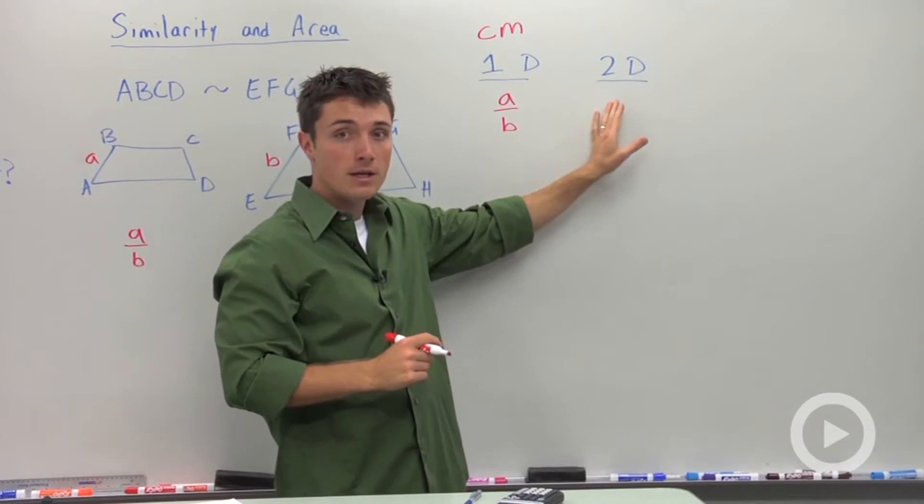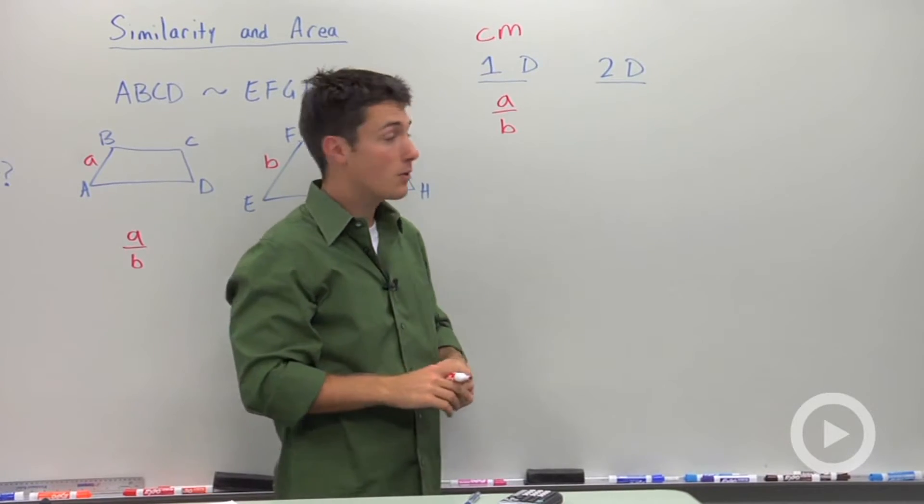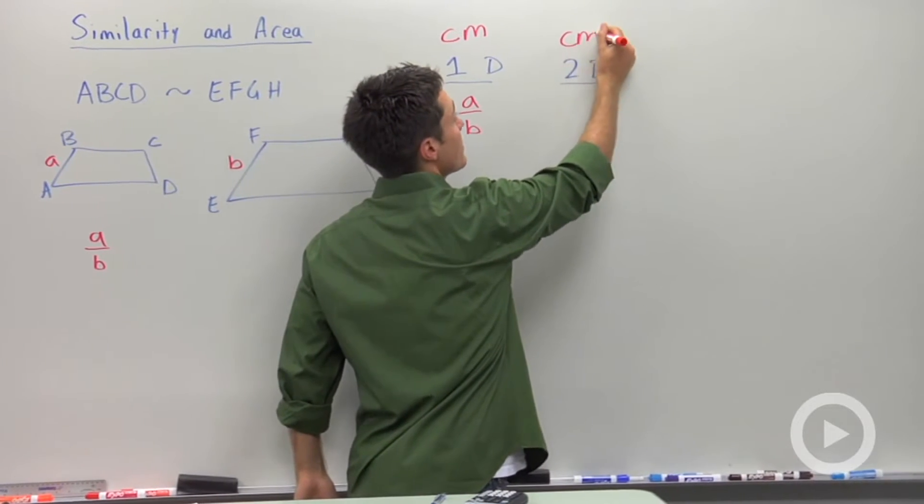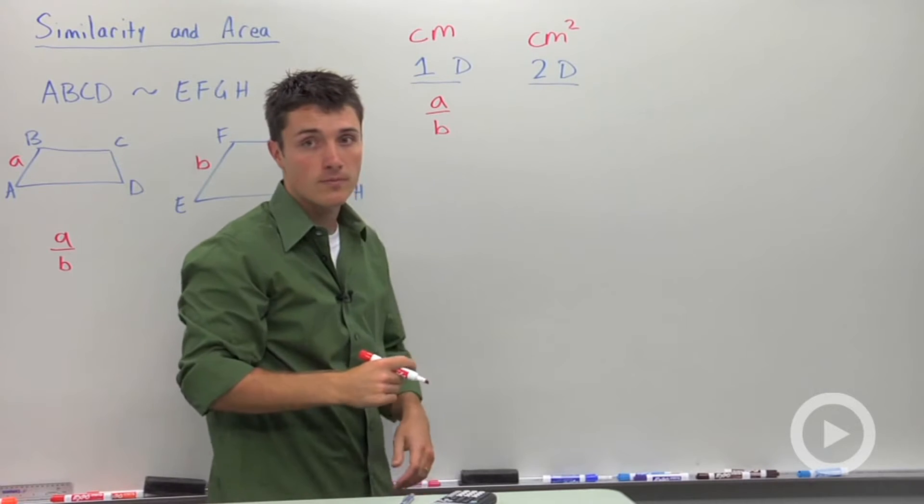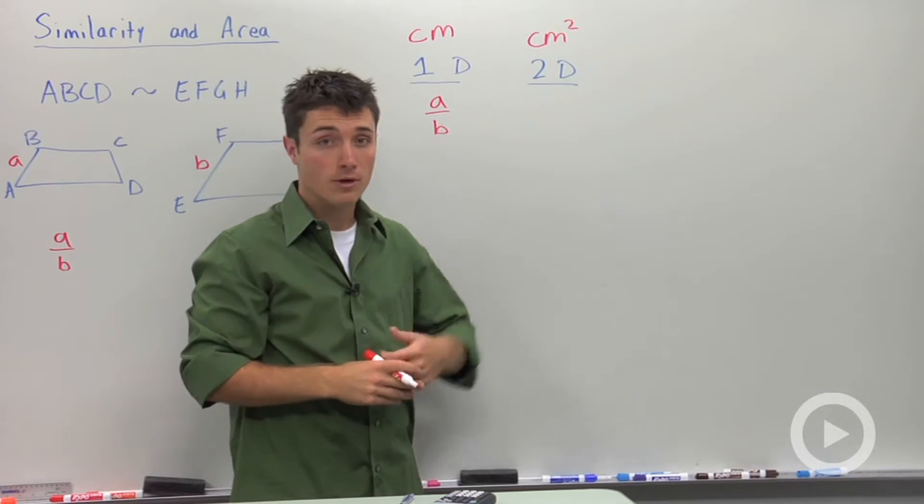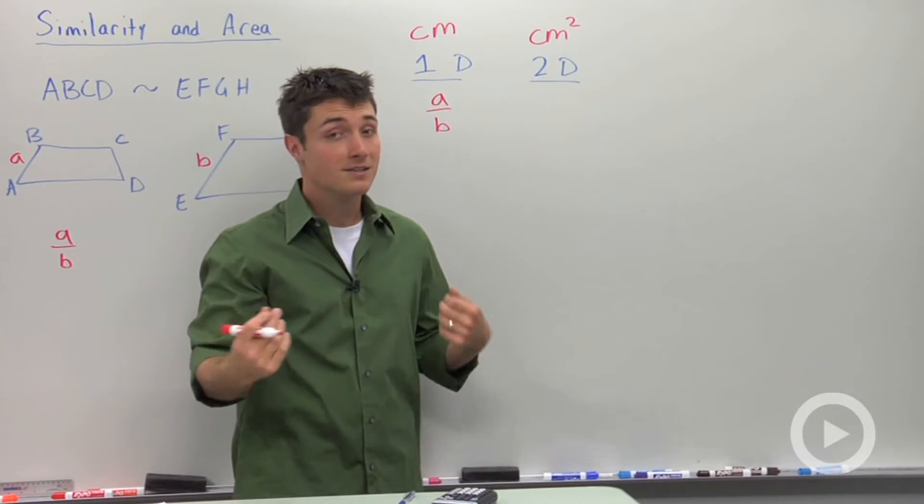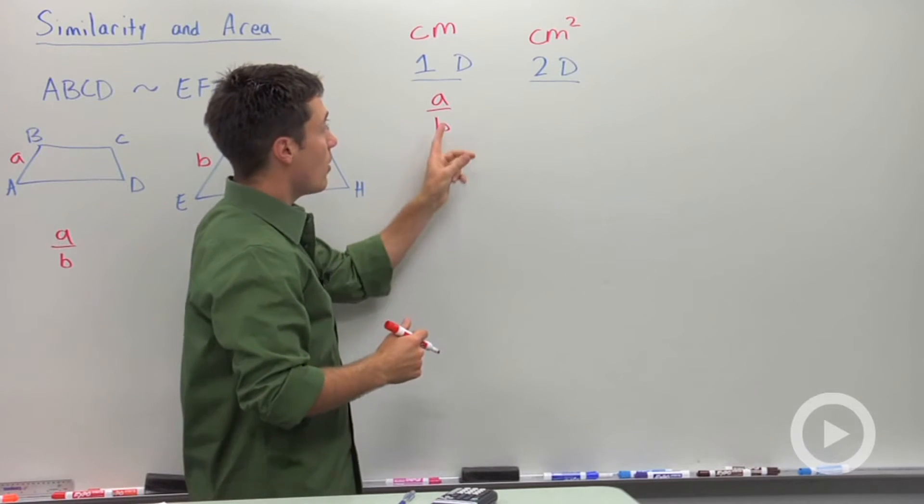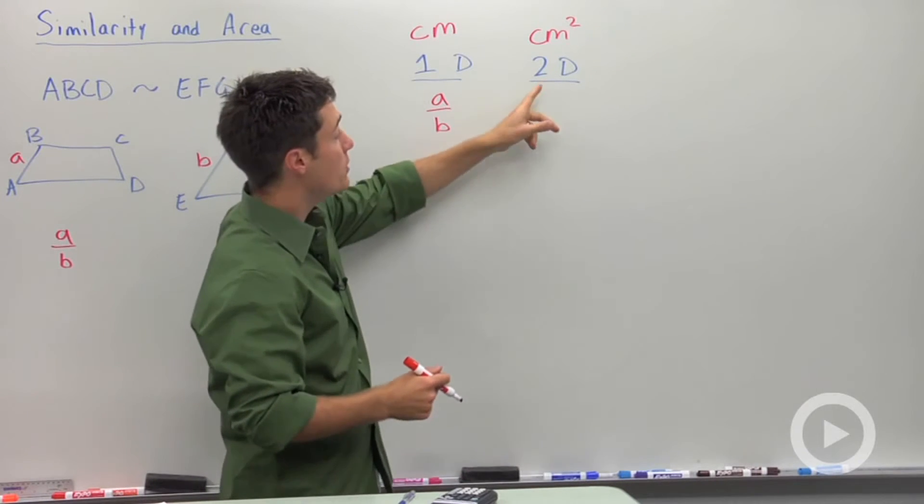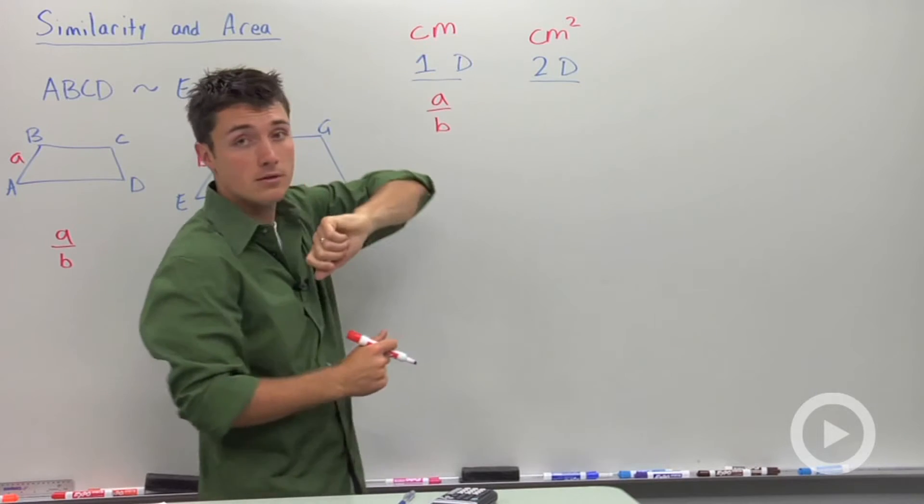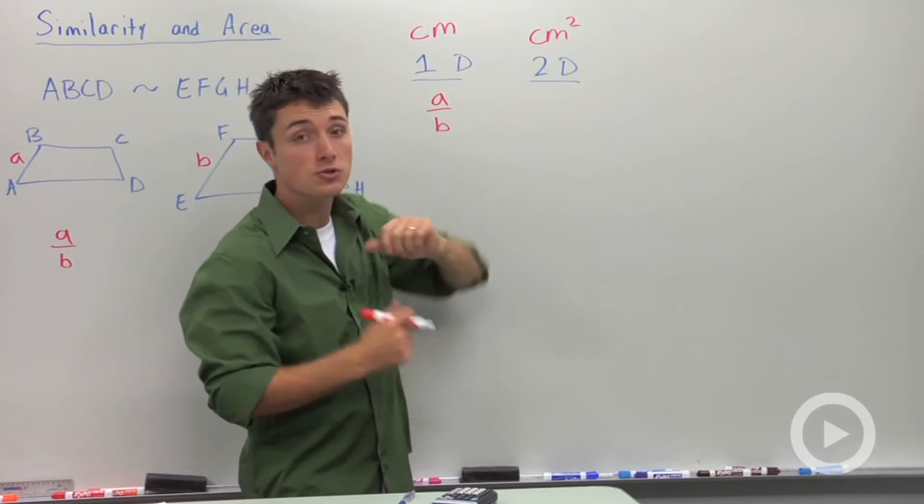Now two dimensionality is talking about area. So we would talk about area as something to the second power. If you think about the area of a square, we're going to have side times side. S times S is S squared. So to go from one dimensional to two dimensional, we take our exponent and we're going to square it.